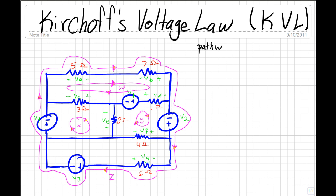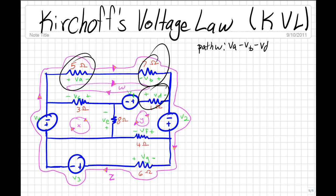for path W, we have this voltage drop which is positive, so VA, plus this voltage drop which is negative, so minus VD, plus this voltage drop which is positive, so plus V1, plus this voltage drop which is positive, so plus Vc, and the sum of these should equal to zero.